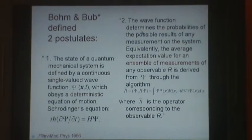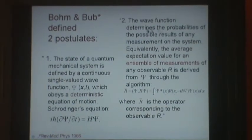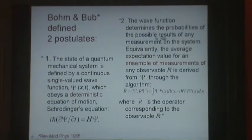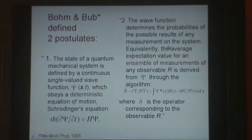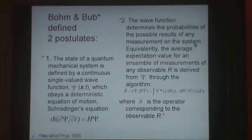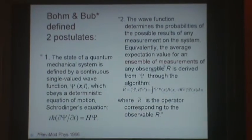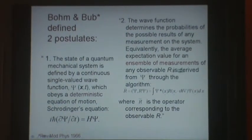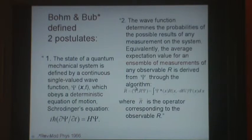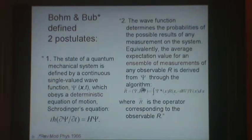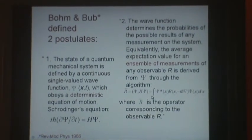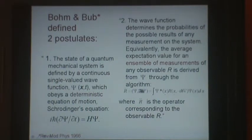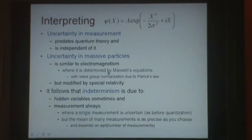The second postulate is about measurement. The wave function determines the probabilities of the possible results of any measurement on the system. Or equivalently, the average expectation value for an ensemble of measurements of any observable R is derived from psi through the algorithm shown. It's the same algorithm as we used earlier.